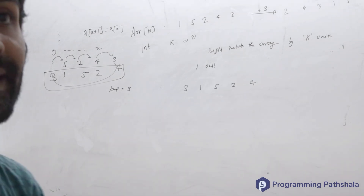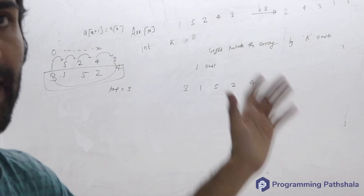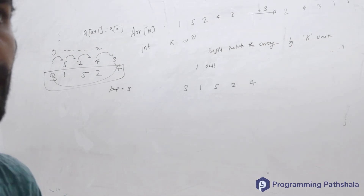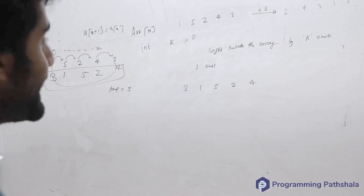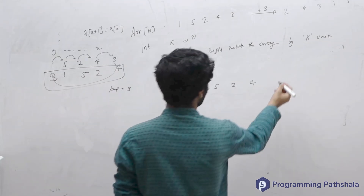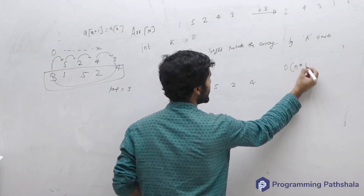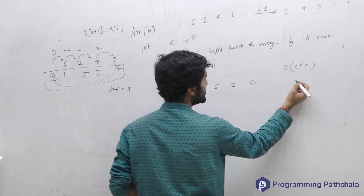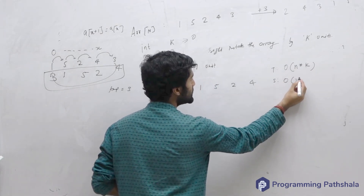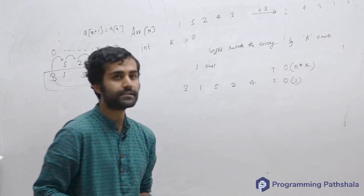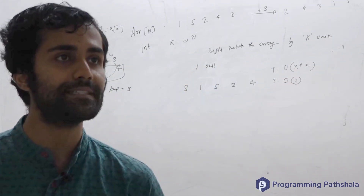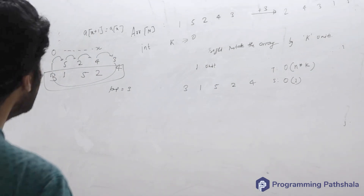You can do this process k times to right rotate by k units. If you do it k times, the time complexity will be O(n * k), and the space complexity will be O(1) because you did not use any extra space.